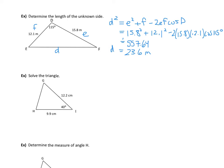Solve the triangle — find any missing side lengths and missing angles. The only option here is the cosine law because we have two sides and the contained angle. I'm going to rewrite the cosine law in terms of I: I squared equals G squared plus H squared minus 2GH times the cosine of angle I.